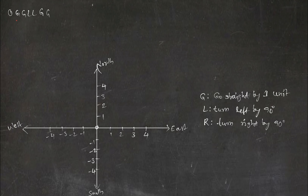The first instruction set is G, G, L, L, G, G. Initially I am at position (0, 0) facing north. After executing G, I move one unit north to (0, 1). Another G moves me further to (0, 2). Then I get L — turning left by 90 degrees from north brings me to face west. Another L turns me again 90 degrees to the left, so now I'm facing south.